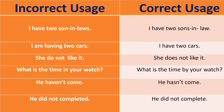'I have two son-in-law' — correct: 'I have two sons-in-law.' 'I am having two cars' — correct: 'I have two cars,' because 'I am having' is used in the context of eating, while 'I have' denotes possession. 'She do not like it' — subject-verb agreement error — correct: 'she doesn't like it.'